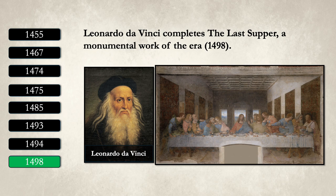Da Vinci's mastery in portraying the emotions and dynamics among Jesus and his disciples showcases the Renaissance's focus on human experience and the natural world. The Last Supper exemplifies Da Vinci's genius in blending scientific observation with artistic creativity, influencing countless artists and enduring as a symbol of humanist ideals.